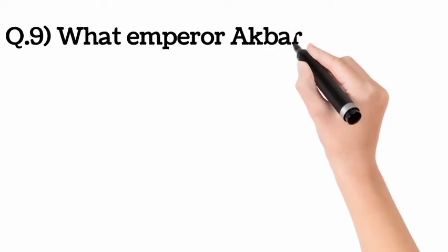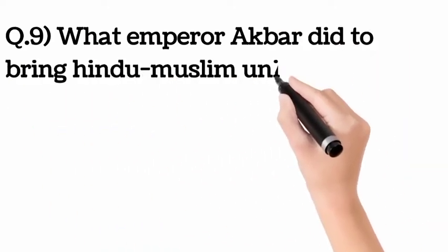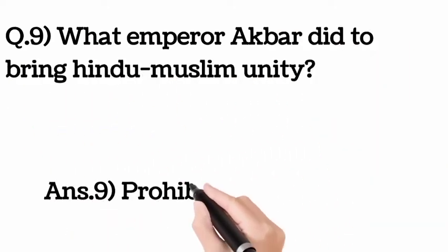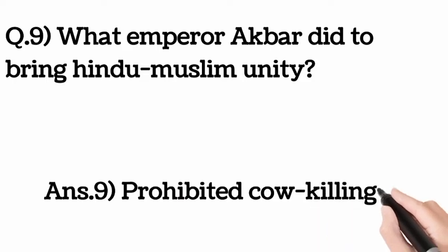Question number 9: What did Emperor Akbar do to bring Hindu-Muslim unity? Answer: Prohibited cow killing.